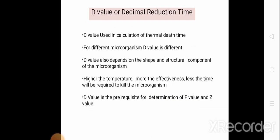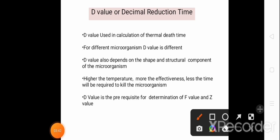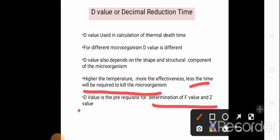The D value is used in the calculation of thermal death time. For different microorganisms, the D value is different, and it also depends on the shape and structural components of the microorganism. Higher the temperature, more the effectiveness, and less time will be required to kill the microorganism. The D value is the prerequisite for determination of the Z value and F value.